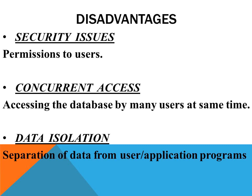So these are the basic seven points of the disadvantages of the traditional file system: first was the redundancy problem, then inconsistency, then lack of integration, atomicity problem, security, concurrent access, and data isolation.